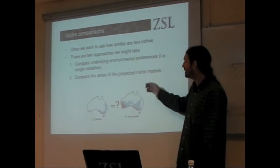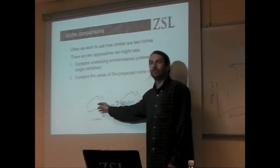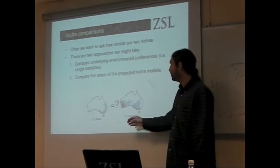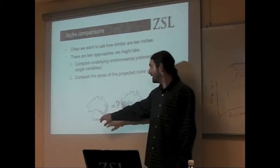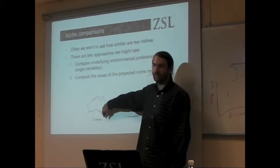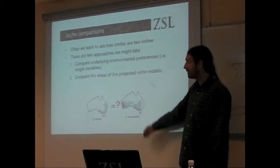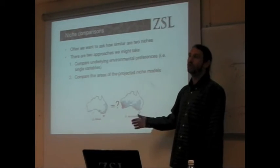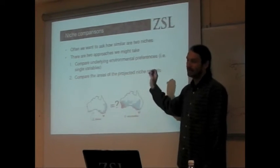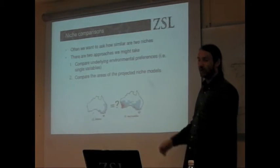Or we could compare the projected niches themselves, so we can look at the maps and say how similar is the area selected as being suitable for this map against this map. This is something that we often want to do when we're trying to look at multiple niches across the phylogeny.